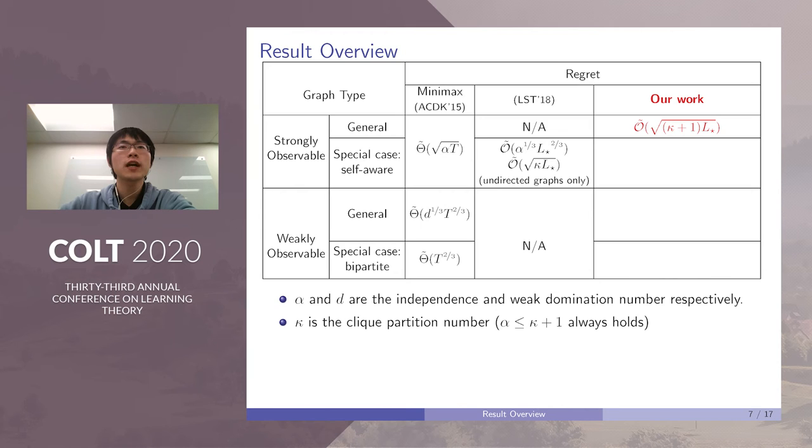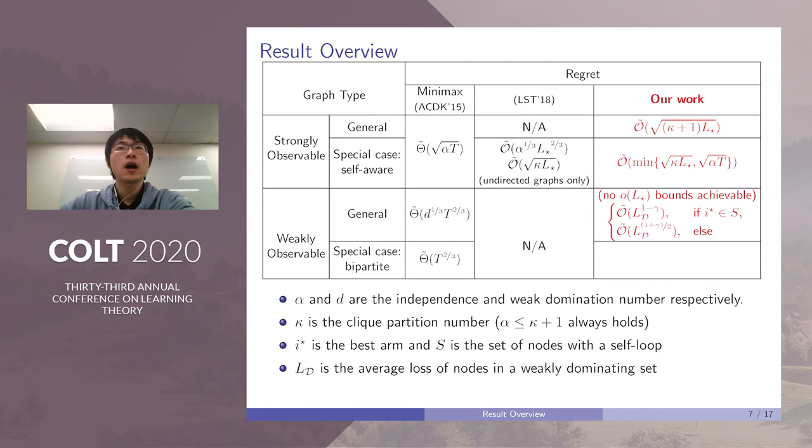In our work, we obtain √(κL*) for general strongly observable graphs. And for self-aware graphs, we provide an extra √(αT) robustness. For weakly observable graphs, we prove that no typical L* regret bound exists. However, we derive regret bound with respect to the average loss of the nodes in a weakly dominating set. Let S be the set of nodes with self-loops. If the best arm is in S, we have the regret Ω(L_d^(1-γ)). Otherwise, the regret is Ω(L_d^((1+γ)/2)). Here, L_d is just the average loss of the nodes in a weakly dominating set. And γ can be any real value between one-third to one-half.